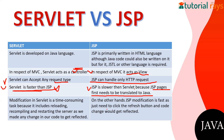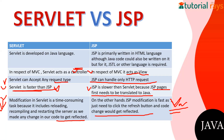JSP is slower than Servlet because the JSP page is first translated into Java and then displayed, which takes more time compared to Servlet. Modification in Servlet is a time-consuming task because it requires reloading, recompiling the whole thing, and restarting the server whenever you make any changes. On the other hand, JSP modification is fast — you just need to click the refresh button and code changes get reflected immediately, because JSP is primarily HTML.